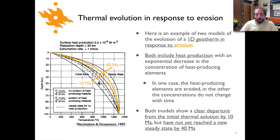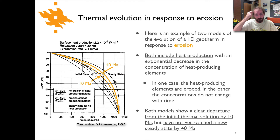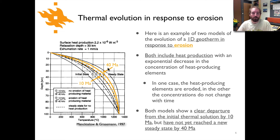As erosion takes place — going from no advection to advection with a velocity of one millimeter per year — temperatures increase across the whole thickness of the lithosphere. In the first 10 million years the increase is much more significant than in the 30 million years following that. The solid line on the far right is the steady-state solution, the eventual temperature that would be reached with infinite time. Significant temperature increase will still occur beyond 40 million years.